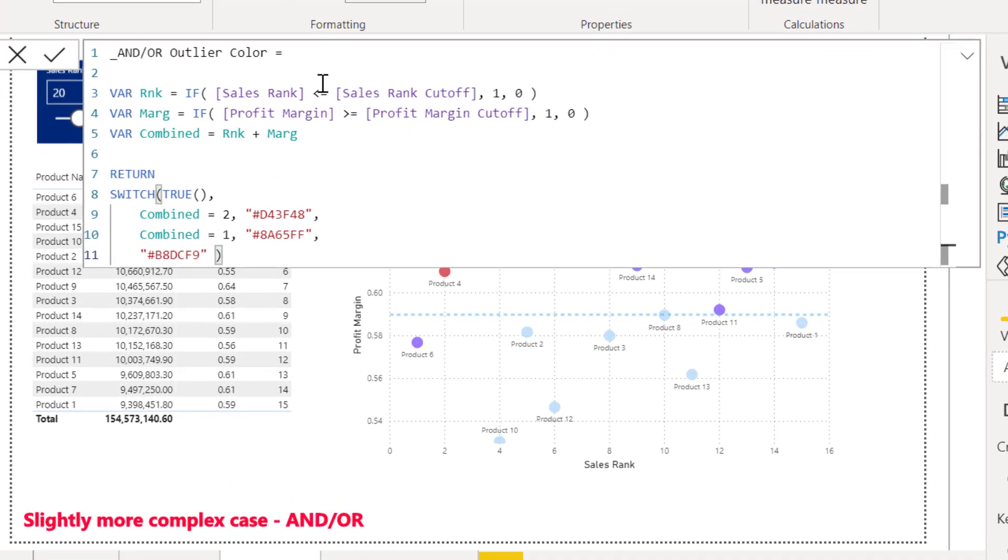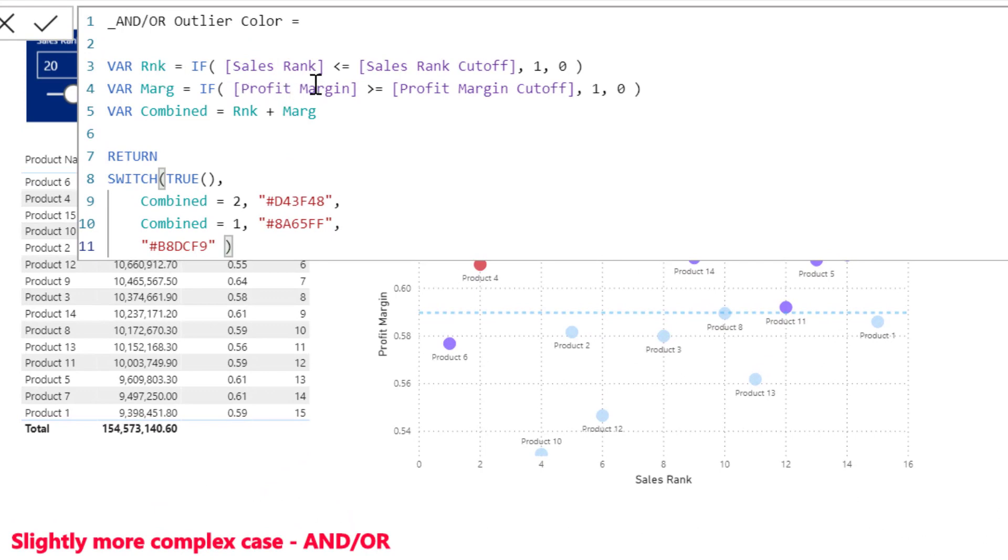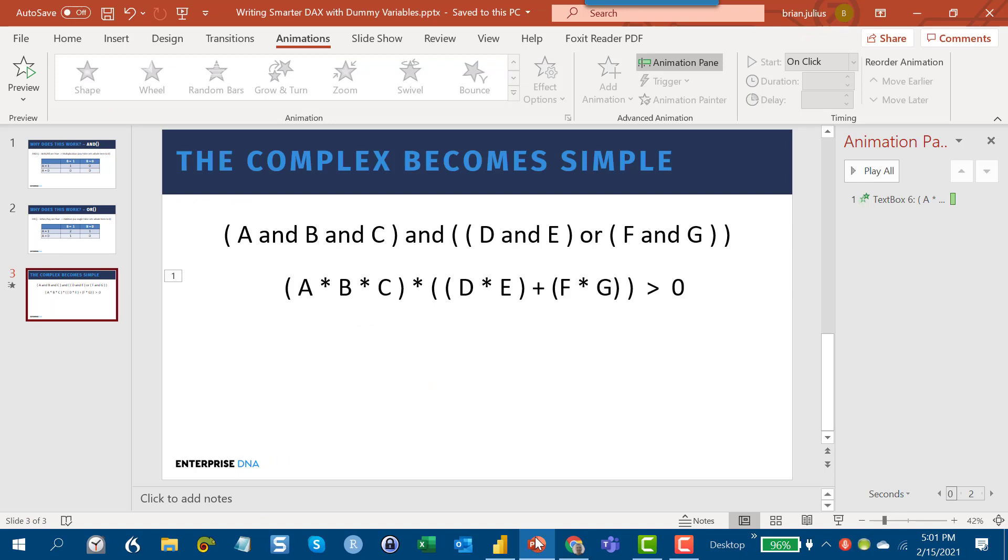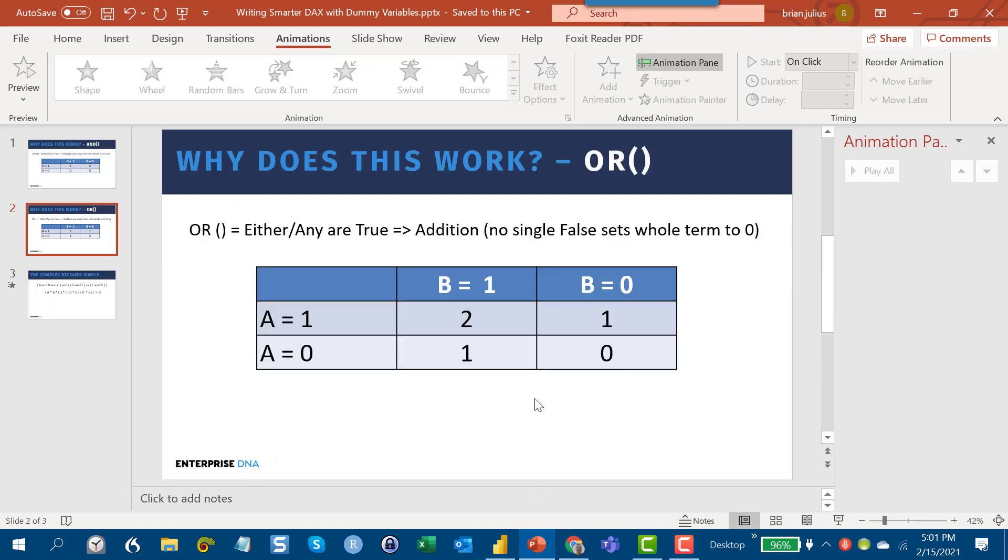And so if we look at the use of dummy variables in this one, what you can see is we've got the same exact dummy variables here. We've got an OR condition set by plus, and then we've got the SWITCH TRUE construct where if it gets the two, so if both are true, we get the red. And if one is true, we get purple, so either here or here. And if neither are true, we just get the default blue color. So that corresponds really exactly to this matrix here that we talked about, in terms of two for both, one for either one, and zero for none.